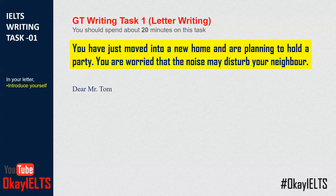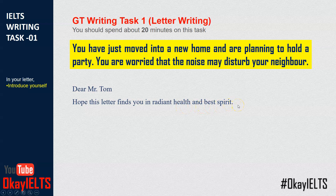So the very first thing is to start the letter with 'Dear,' and because you are writing to your neighbor and you know the name, you write 'Dear Mr.' or 'Miss' and then the name — for example, 'Dear Mr. Tom.' Now the very first sentence: 'Hope this letter finds you in radiant health and best of spirit.' This sentence is very generic — it doesn't say anything about why you are writing. It simply expresses goodwill. You can memorize this sentence exactly or replace some words, but your first sentence should follow this format.